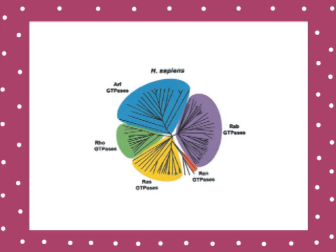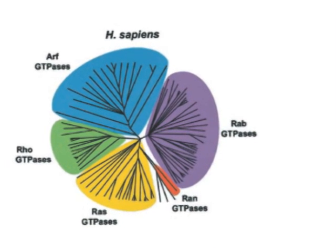RAB GTPases have emerged as central regulators of vesicle budding, motility, and fusion.